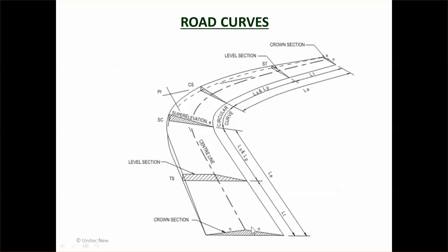Roads also have curves. Normally you'll have this cross section with a 3% camber going either way to drain the road. As you're going around corners, to make it easier to navigate, one side will actually raise up to provide super elevation so the car can get around the corner.